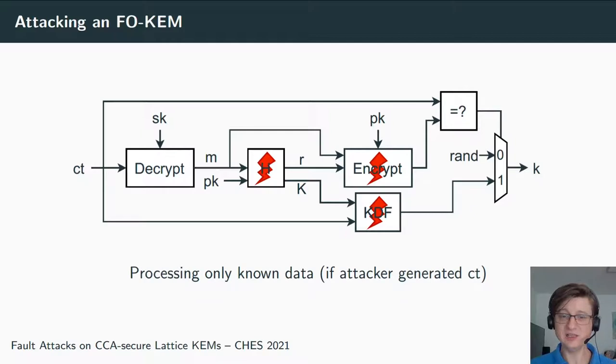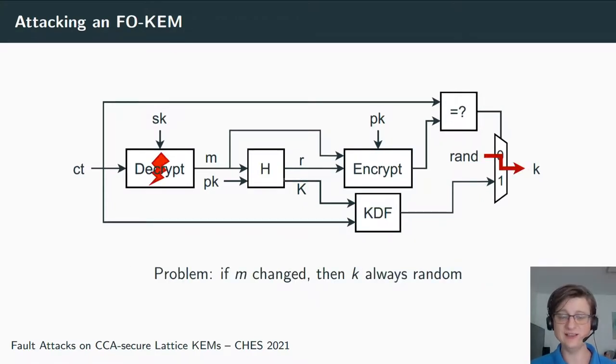Now, faulting in these three middle components also doesn't help us a lot, because if we assume that the attacker generated the ciphertext—meaning that he runs encapsulation honestly—then he already knows all the values that are processed in these three boxes, because this is essentially just encapsulation again, the re-encryption. It uses the exact same values, and of course faulting a known value doesn't really help us a lot. So finally, we can fault the decryption, which is also kind of the most logical target because it involves the secret key. The problem is, in fault attacks we often think of it in a way that, okay, we inject a fault and we get some disturbed result, and we use this disturbed result to compute backwards and derive information on the key.